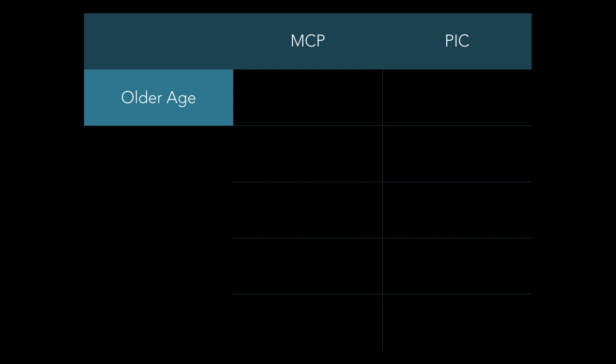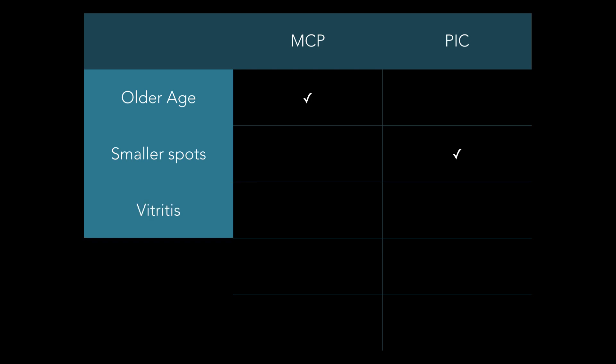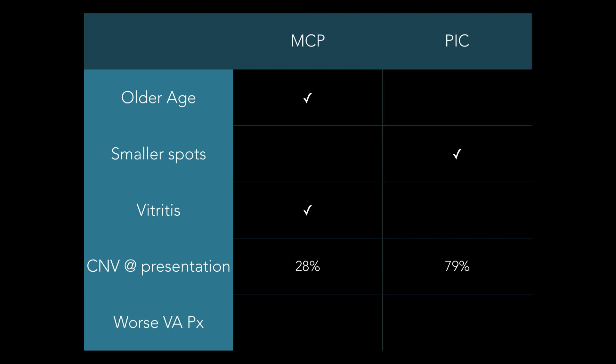Oh, we've got a little quiz. MCP and PIC — as the only young myopic or formerly myopic female in the room, which one's older, MCP or PIC? Right. Which one has smaller spots? Right. Vitritis — which one has vitritis? Good — PIC does not. CNV at presentation? PIC — they could both have it, but more likely to be PIC. And which has a worse visual prognosis? That's right. Good. I must be teaching this well because the first time I gave that quiz everybody got it wrong.